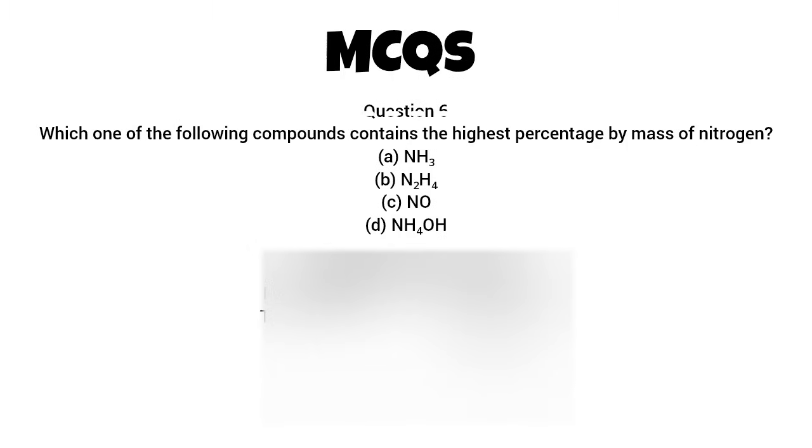Question 6. Which one of the following compounds contains the highest percentage by mass of nitrogen? Options: A. NH3. B. N2H4. C. NO. D. NH4OH. Let's compare roughly. NH3 has 14 seventeenths times 100, almost equal to 82% nitrogen. That's the highest among the options. So, the correct answer is A. NH3.